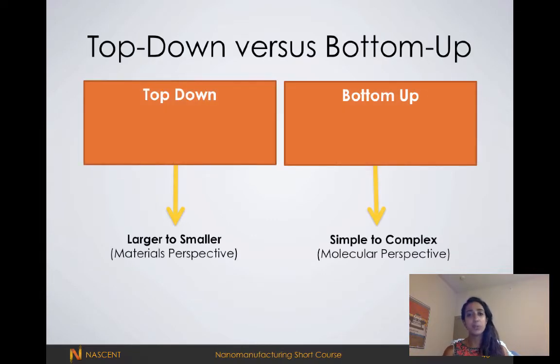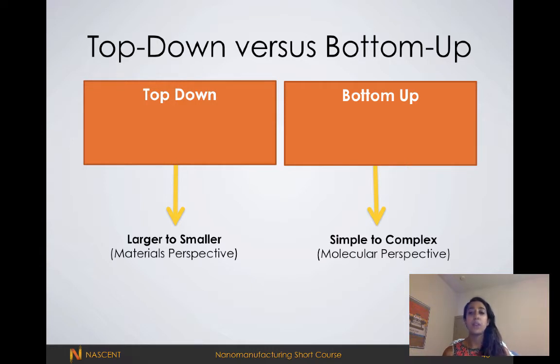Nanomanufacturing approaches can generally be classified into two different categories: top-down or bottom-up. In a top-down approach we're going from large to small, whereas in a bottom-up approach we're going from simple to complex.